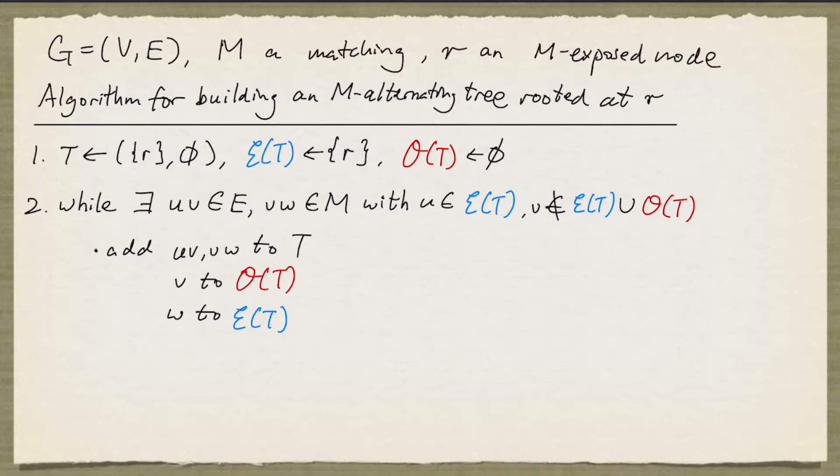Here's the algorithm for building an M-alternating tree rooted at R. We begin by setting the tree to just be the root node, and we maintain two sets: E called the even set, initially it has just the node R, and O called the odd set, which has no nodes at the beginning.